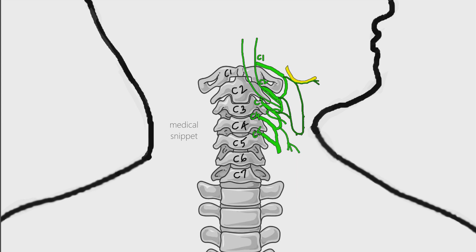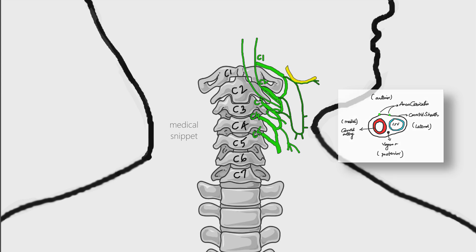Branches of ansa cervicalis are branch to superior belly of omohyoid, branch to sternohyoid, branch to sternothyroid, and branch to inferior belly of omohyoid. The ansa cervicalis lies in the carotid triangle and it is superficial to carotid sheath. It should be noted that all the infrahyoid or strap muscles are innervated by ansa cervicalis, except thyrohyoid.